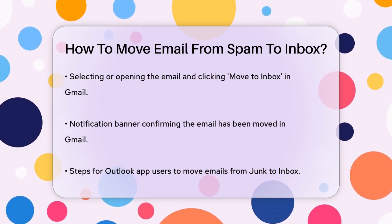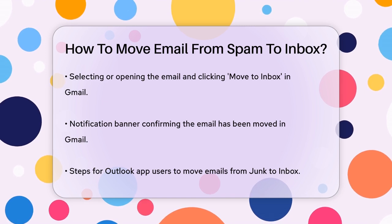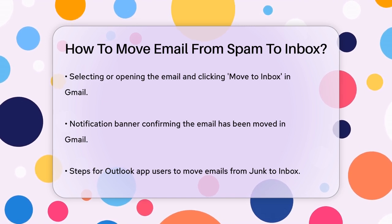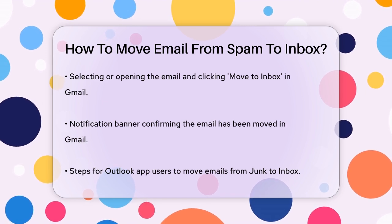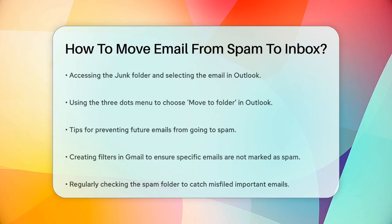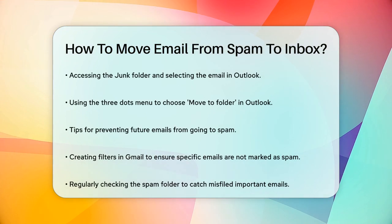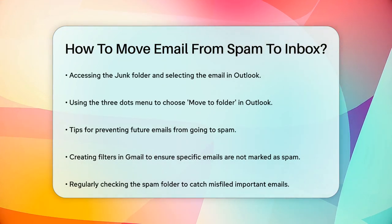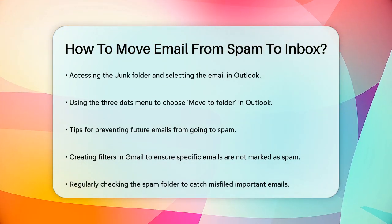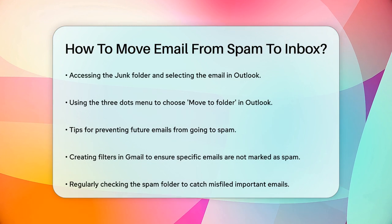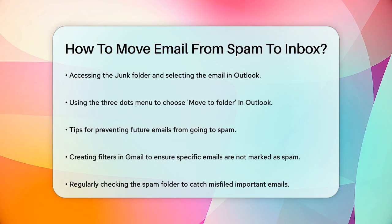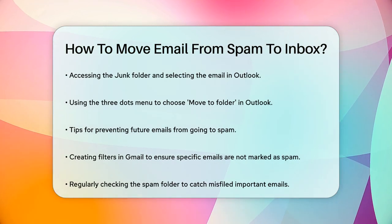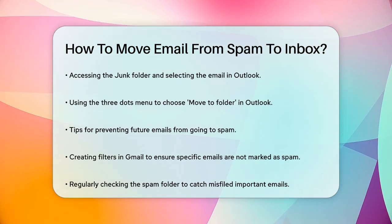To prevent emails from going to spam in the future, you can set up filters. For example, in Gmail, you can create a new filter by going to Settings, then Filters, and creating a new filter with the sender's email address. Select Never send it to spam and save the filter.